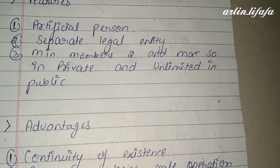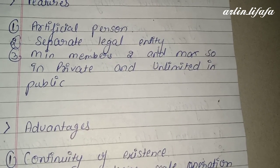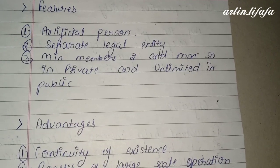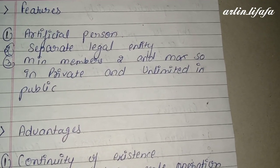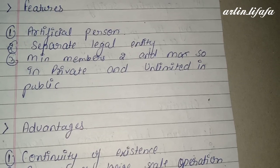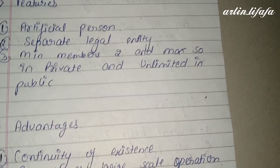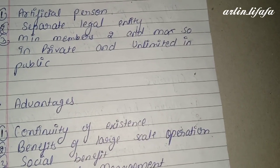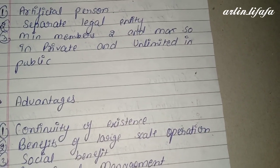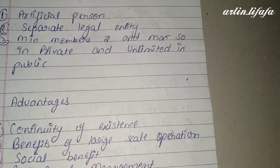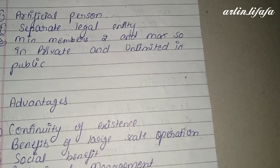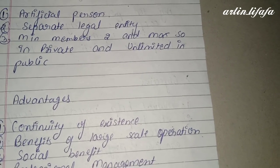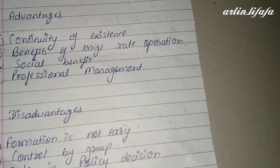Joint stock company के features: सबसे पहले यह एक artificial person होता है — सारी formalities company के नाम के according होती हैं। Minimum members 2 होते हैं। Maximum private company में 50 होते हैं और public sector में unlimited होते हैं।